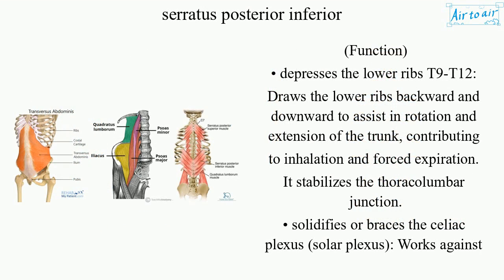Function: Depresses the lower ribs T9-T12, draws the lower ribs backward and downward to assist in rotation and extension of the trunk, contributing to inhalation and forced expiration.